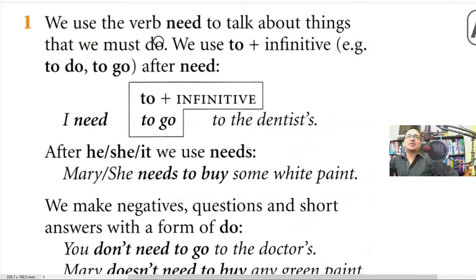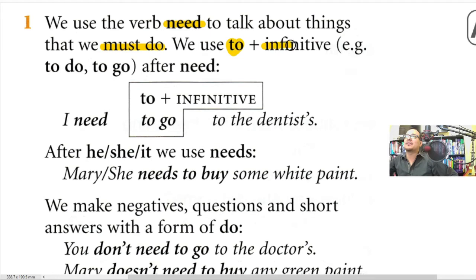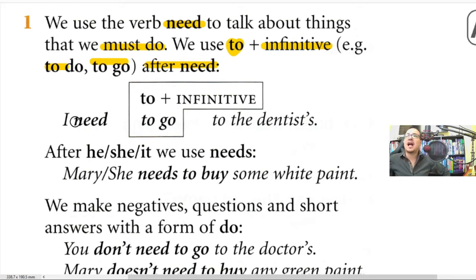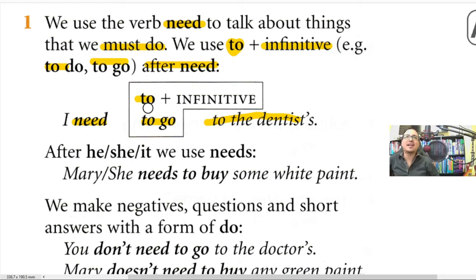We use the verb 'need' — usamos el verbo need, which means 'necesitar' — to talk about things that we must do, para hablar acerca de cosas que debemos hacer. We use 'to' plus an infinitive after 'need': to do, to go, etc. For example: 'I need to go to the dentist' — yo necesito ir al dentista. This is easy and it's a review from our early classes.